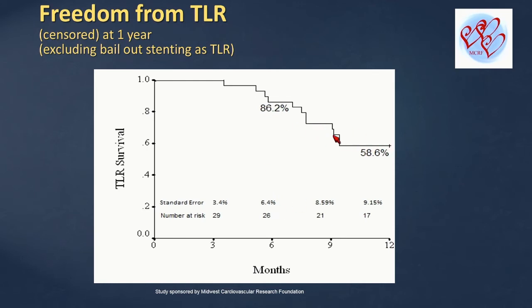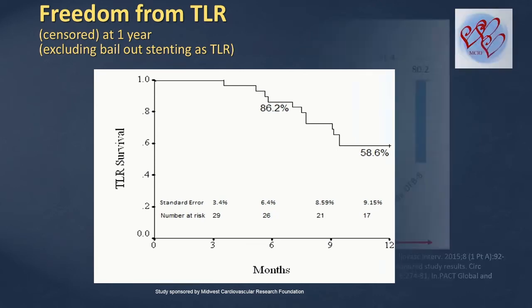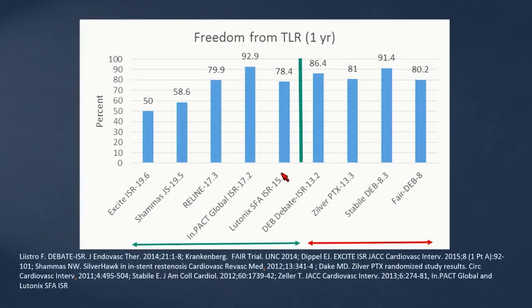However, there was a decline between six months and one year, down to 58.6% — similar to what we've seen with laser. This reinforces that while we may achieve very good acute results, drug-coated balloon may be the answer for long-term durability. Comparing across long lesion ISR studies from Excite through Lutonix: ISR freedom from TLR at one year was 50% with Excite and 58.6% with JetStream ISR — lagging behind the Viabahn graft stent and drug-coated balloon data.